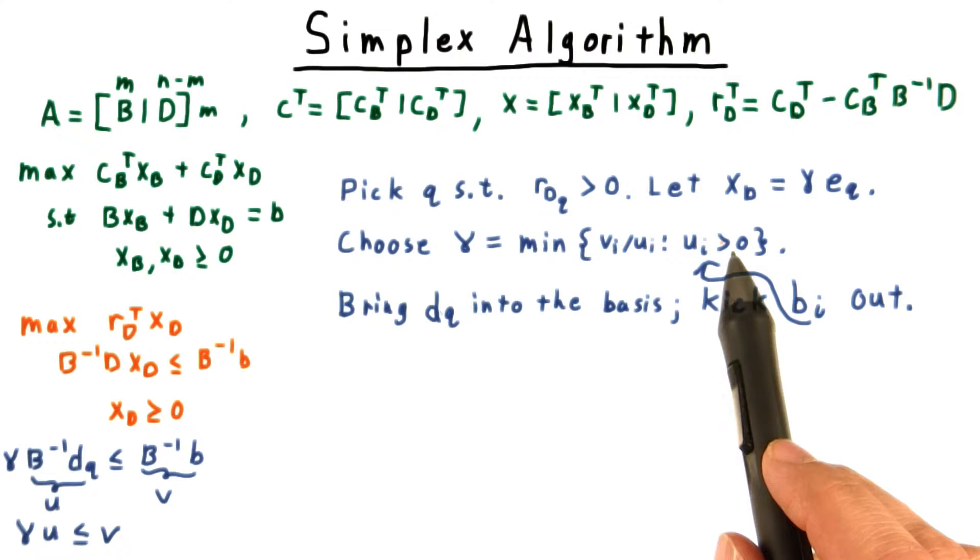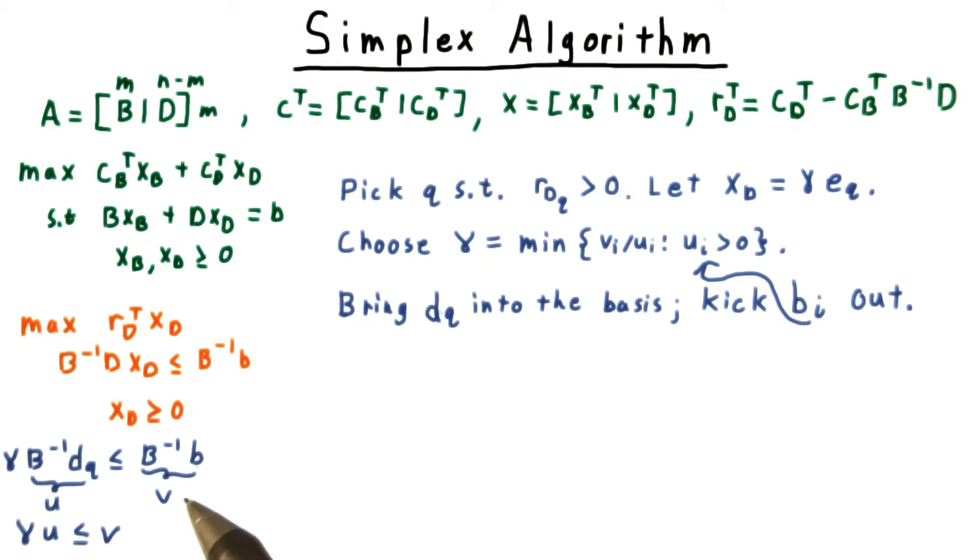Setting gamma to this value makes one of these constraints tight and sends the corresponding entry of xb to 0. Remember that this equation came from the constraint that xb be non-negative.